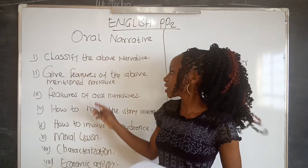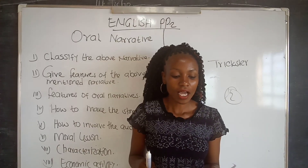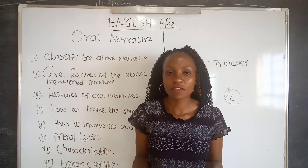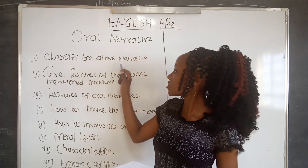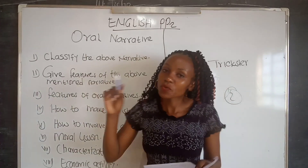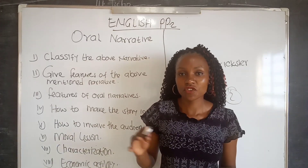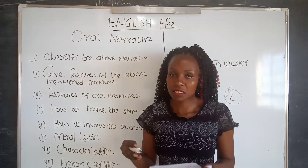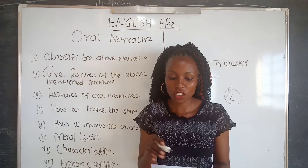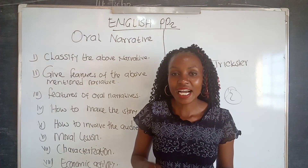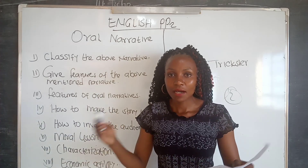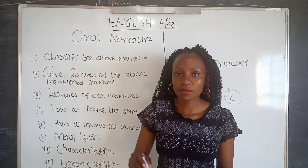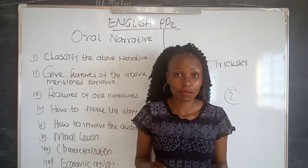The second common question is: give features of the above mentioned narrative. The narrative we have mentioned in this case is trickster narrative, so we give features of trickster narrative. It has an opening formula — 'long time ago' — depending on the narrative itself, and it has a closing formula such as 'my story ends there,' or maybe the small animal tricks the big animal.